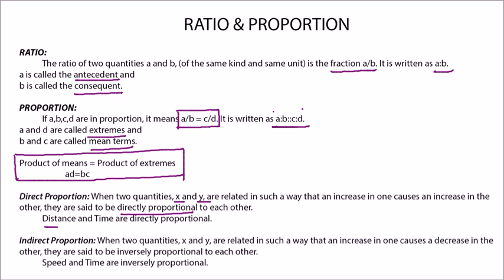So distance and time are directly proportional. Inverse Proportion: When two quantities X and Y are related in such a way that if X increases, Y decreases. They are inversely proportional to each other.